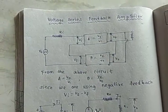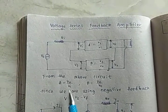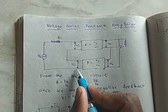Since we are using negative feedback system, VI is equal to Vs minus Vf.